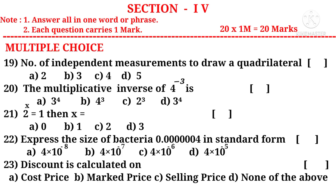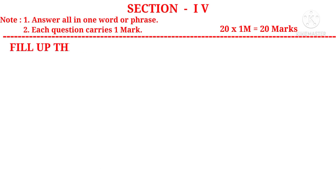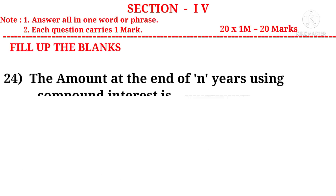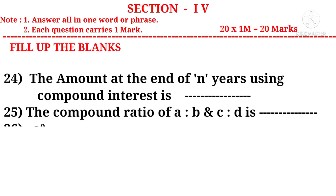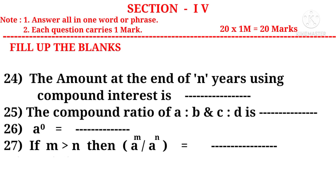Twenty-first question: 2 power x equals 1, then x equals dash — options A, B, C, D — from Chapter 4, Exponents and Powers. Twenty-second question: express the size of bacteria 0.00000004 in standard form — options A, B, C, D — from Chapter 4, Exponents and Powers. Twenty-third question: discount is calculated on — options A, B, C, D — from Chapter 5, Comparing Quantities Using Proportion. Twenty-fourth (fill in the blank): the amount at the end of N years using compound interest is — dash — from Chapter 5, Comparing Quantities Using Proportion.